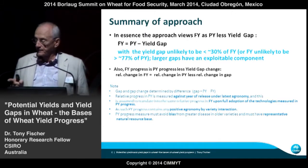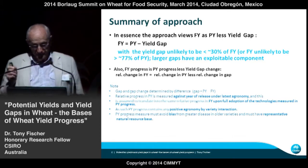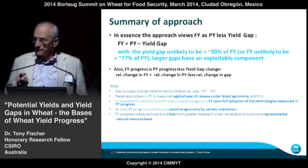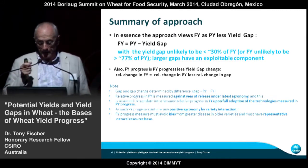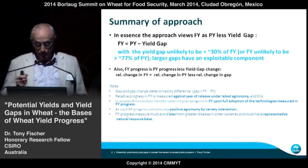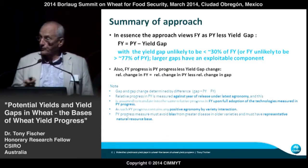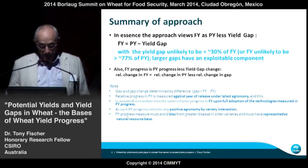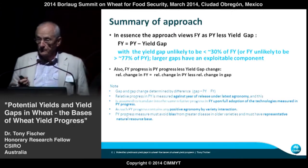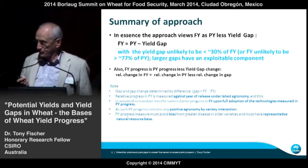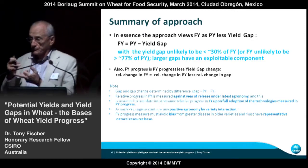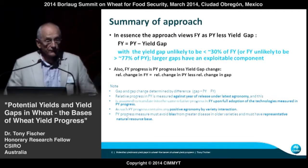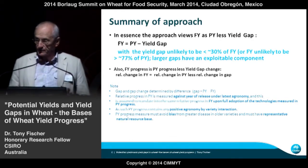This progress translates into the same relative progress in farm yield upon full adoption of the technologies measured in the potential yield progress. The potential yield progress also captures important positive interactions between genetic improvement and agronomic change, because potential yield is measured at the most recent agronomy. It's very important to avoid bias — for example, having more disease in older varieties — and that the potential yield be measured in an environment representative of the climate and soil of the region.